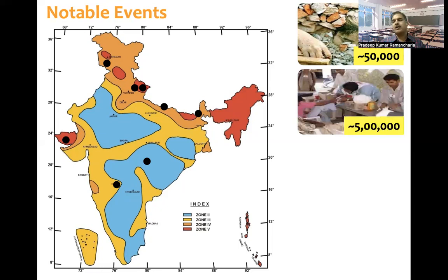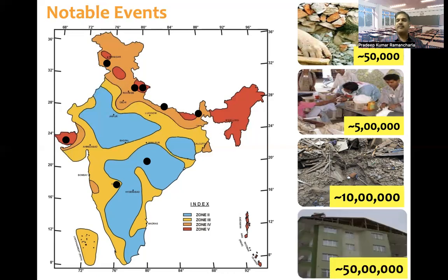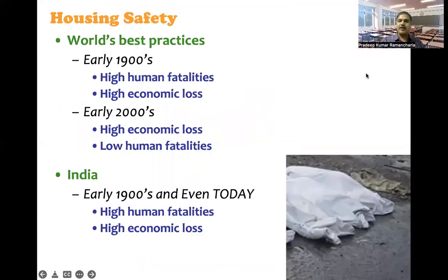A total of around 5 lakh buildings were severely damaged. 5 lakh people severely got injured. 1 million buildings collapsed, and 5 million houses got severely damaged. So in summary: 50,000 people died, 5 lakh people severely injured, 1 million houses collapsed, and 5 million houses got severely damaged.